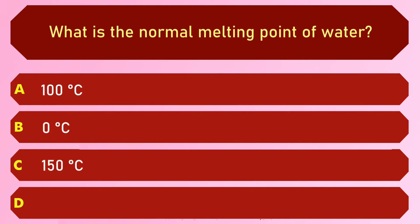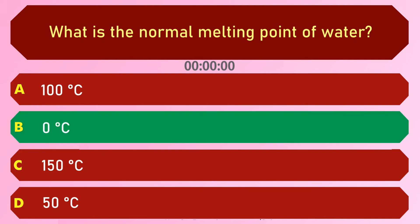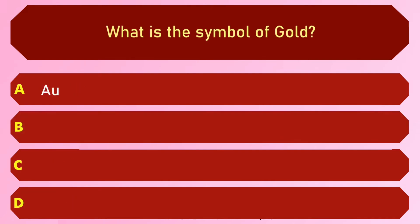Options are: A) 100 degrees Celsius, B) 0 degrees Celsius, C) 150 degrees Celsius, and D) 50 degrees Celsius. The answer is option B, 0 degrees Celsius. What is the symbol of gold? Options are: A) Au, B) Ag, C) G, and D) Gd.